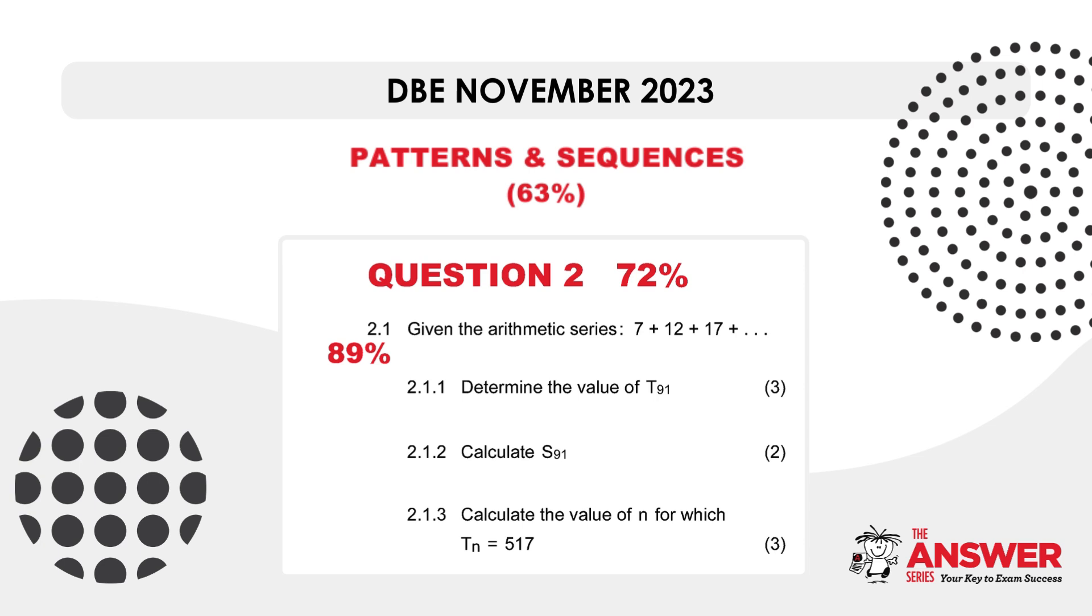Let's start by having a look at the overall performance of the section and then question 2 specifically. The patterns and sequences section of the November 2023 matric exam had a 63% average achievement countrywide. Question 2 from this topic as a whole achieved a 72% average.